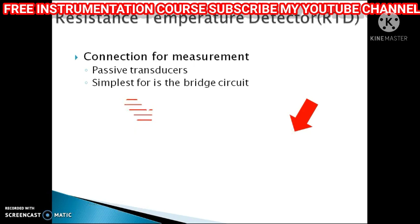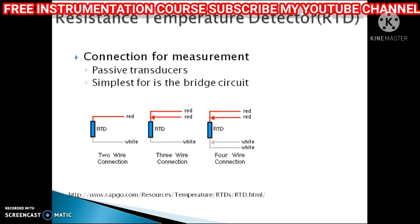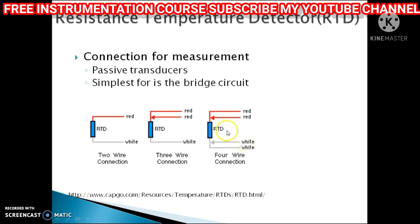RTDs are resistive devices, so lead resistance directly affects accuracy. The error can be quite large, and hence three types of connections are available. The two-wire connection has no compensation. In the three-wire connection, one wire goes to ground and two wires are used for measurement. For more accurate readings, the four-wire connection is used.